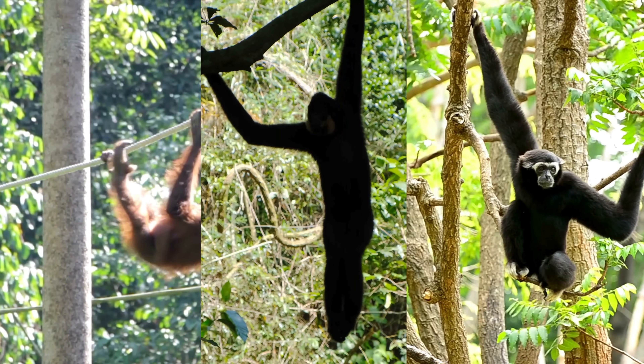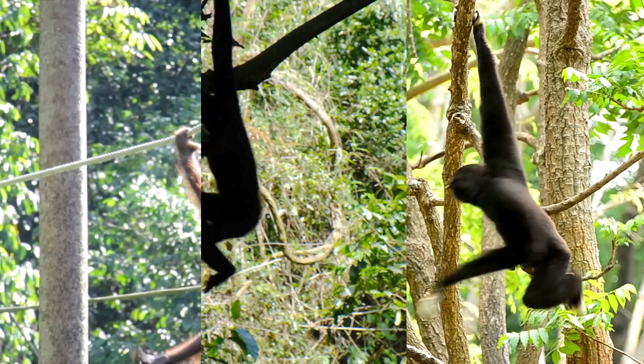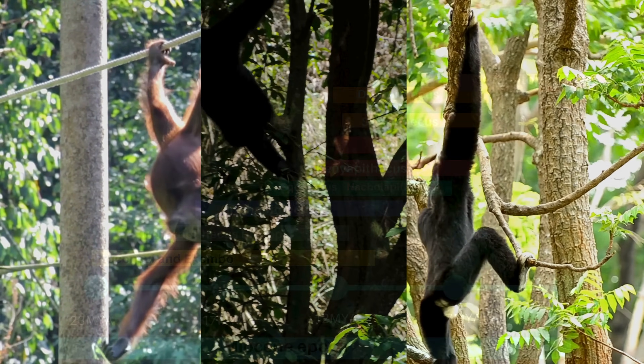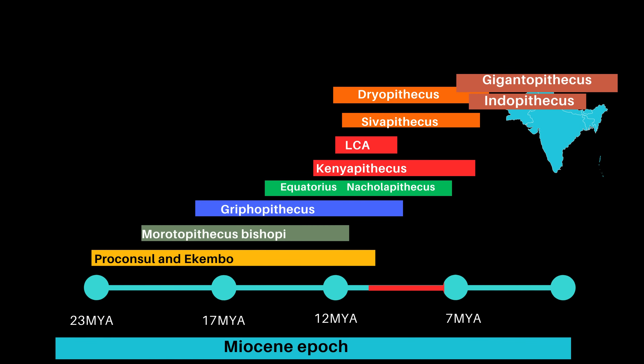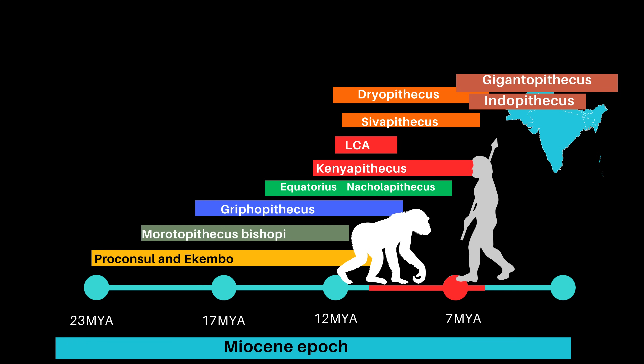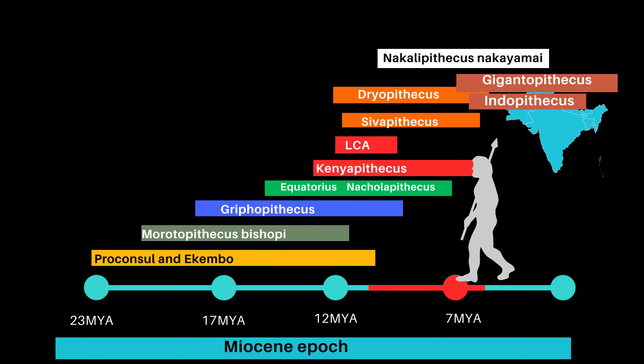Parallel evolution, where similar traits evolve independently due to shared genetic and developmental pathways, may explain some post-cranial similarities related to suspensory behaviors among extant apes. Between 11 and 5 million years ago there is a lack of fossils showing the transition from apes walking on all fours to humans walking upright. However, a lower jawbone and teeth found in Kenya suggest a new species, Nakalipithecus nakayamai, which could be related to the common ancestor of gorillas, chimpanzees, and humans.